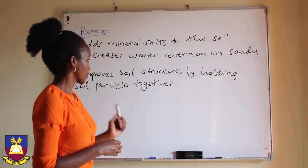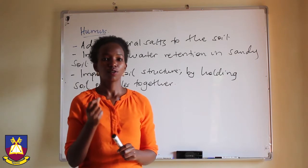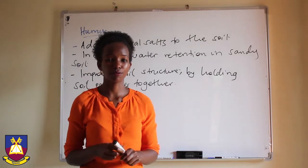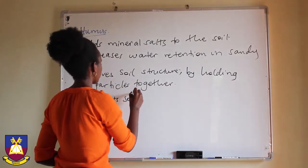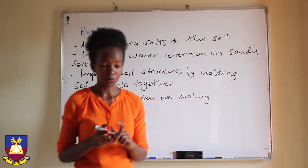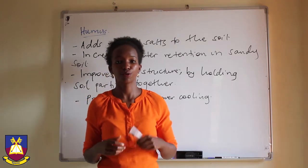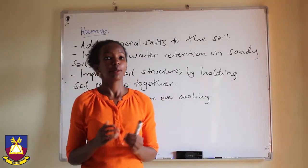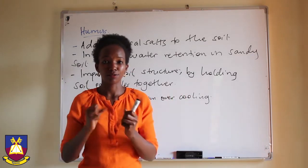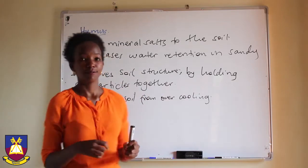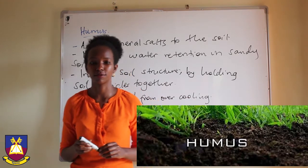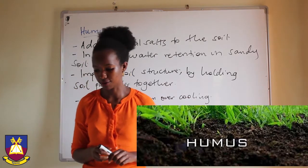Humus also prevents soil from overcooling because it retains some of the heat. The temperature can get so cold that it is not favourable for the living organisms that live in soil. But because of humus, some of the heat is retained — remember, it is dark in colour, so it absorbs heat — and that heat prevents the extreme cold conditions that are not favourable for soil organisms.